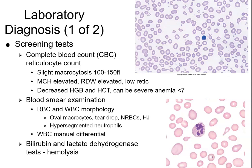To diagnose these conditions, we start with a CBC and reticulocyte count. We expect decreased hemoglobin and hematocrit. In megaloblastic anemias specifically, all three cell lines are decreased — it's pancytopenia — because the DNA synthesis problem affects production of all cells. The MCV will be elevated.